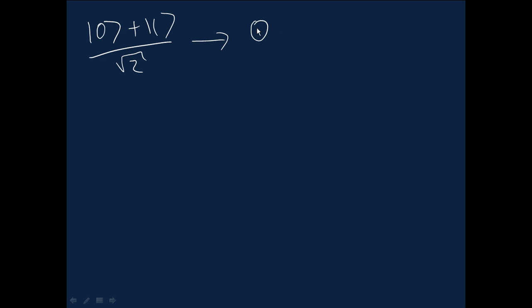If you do a measurement in the computational basis state, you get the outcome 0 with probability given by the square of the amplitude. Well, the amplitude is 1 over root 2, so the square of that is 1 half.